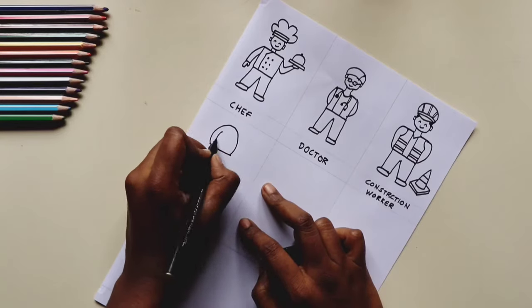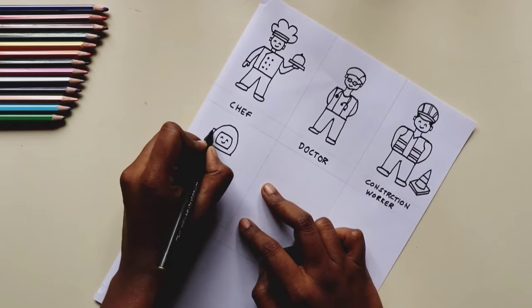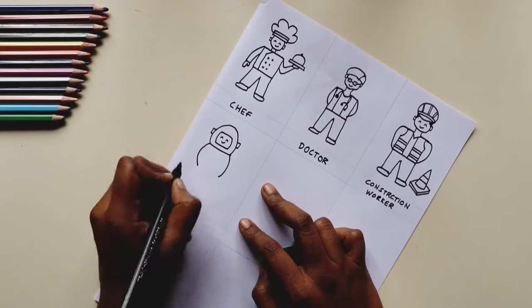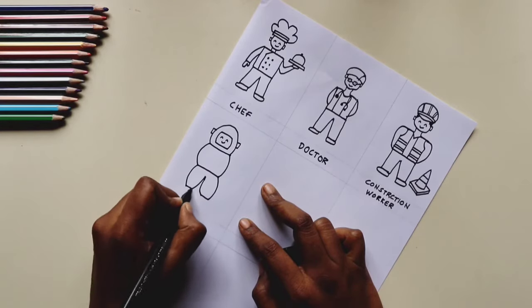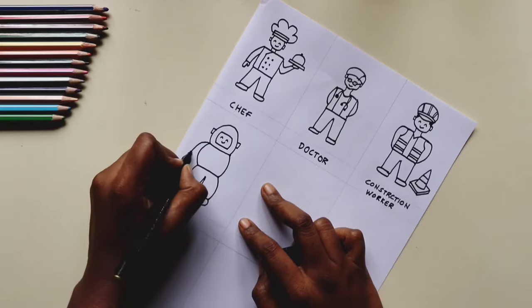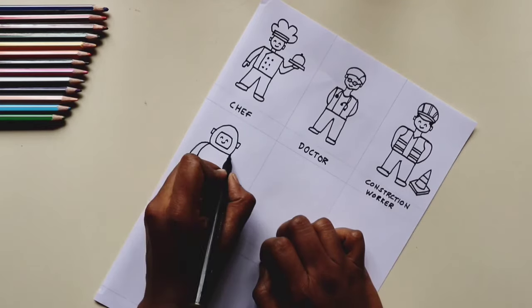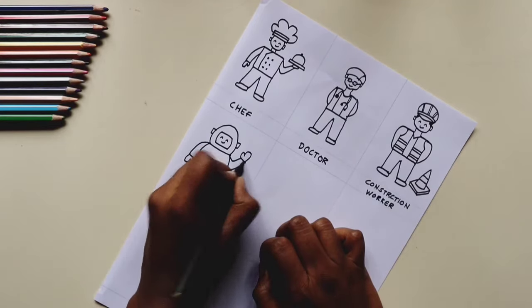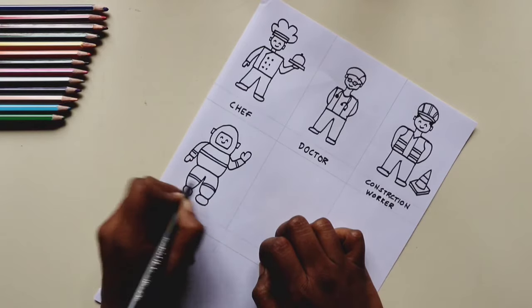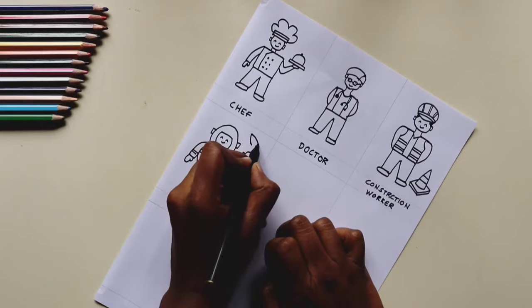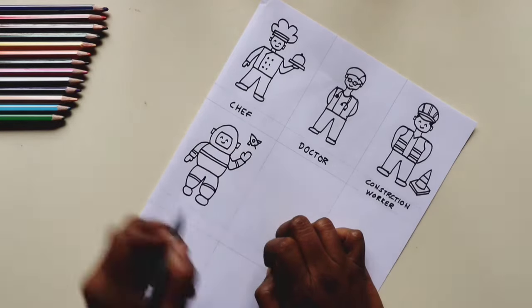The next thing we are going to be drawing is the astronaut. We're going to give him a cool bodysuit that's all fluffy and we'll add some details to it like just some stripes, and then let's just make him wave a hi. I'm going to add a rocket just to make it a little more interesting.